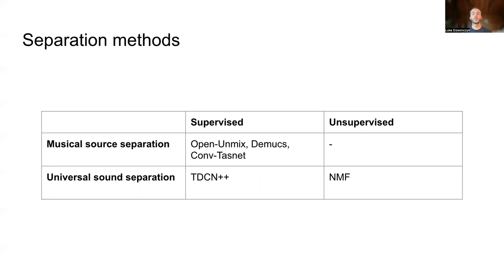In our experiment, we tested multiple sound source separation methods. The musical source separation methods we tested were OpenUnmix, DMux, and ConvTasNet, which are all supervised deep learning models. OpenUnmix is a bidirectional LSTM network, and DMux and ConvTasNet both employ encoder-decoder architectures. For universal sound separation, we used TDCN++, a modified version of ConvTasNet trained for general sound separation instead of music source separation. The one unsupervised method we tested was non-negative matrix factorization, NMF. We chose to test both musical and universal methods because the targets commonly used with Orchidea are often not strictly musical, and we also wanted to experiment with musical source separation techniques because of their accuracy, availability, and diversity of models.